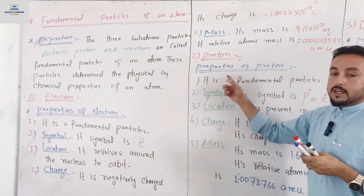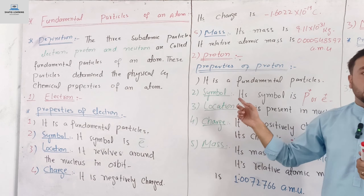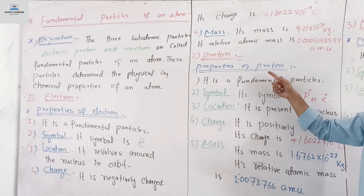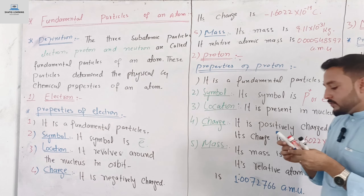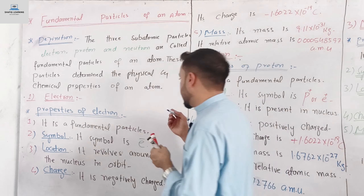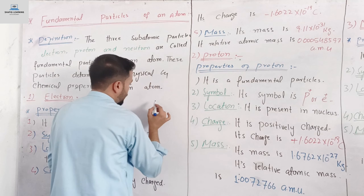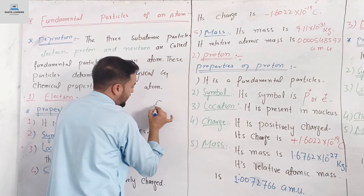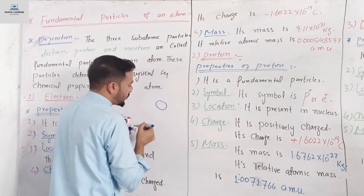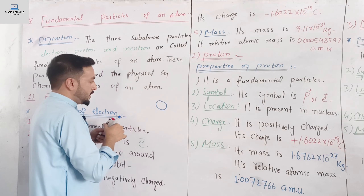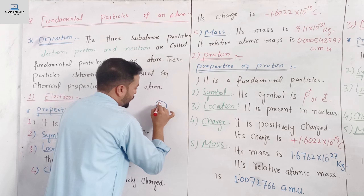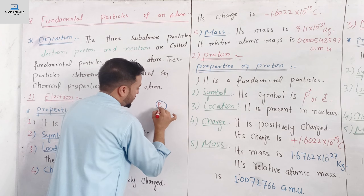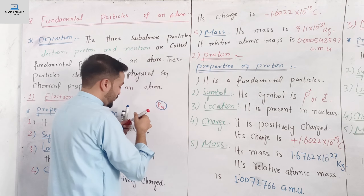The second fundamental particle is the proton. The proton is found in the nucleus of the atom. The nucleus is composed of protons and neutrons.